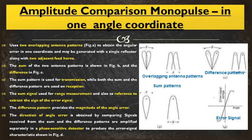In the first method — amplitude comparison monopulse tracking radar with only one angle coordinate — we have to generate two radiation beams. Two overlapping antenna patterns are generated, and they are squinted or overlapping on each other. We can generate these two radiation beams using a single antenna, maybe a parabolic reflector, but with two adjacent feed horns. These two feed horns feed the signal to the parabolic reflector, generating the two beams. This left-side figure shows a polar coordinate representation, and the right side shows a rectangular coordinate representation.